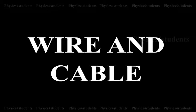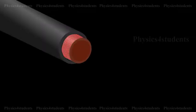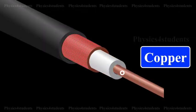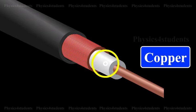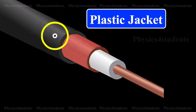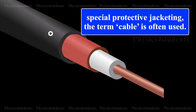Wire and Cable. Copper is an inexpensive metal that is easily made into wire. Fortunately, it is also an excellent conductor of electricity. When separate wires are collected into bundles under a special protective jacketing, the term cable is often used.